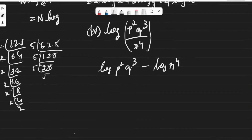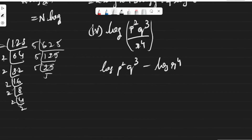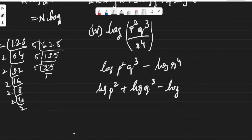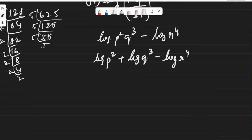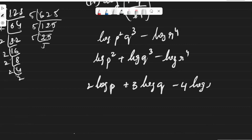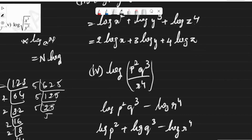For the fourth one, we have log(p²·q³ / r⁴), which gives us log(p²) + log(q³) − log(r⁴). By the log(a^n) = n·log(a) formula, this will be equal to 2·log(p) + 3·log(q) − 4·log(r). The fourth one is done.